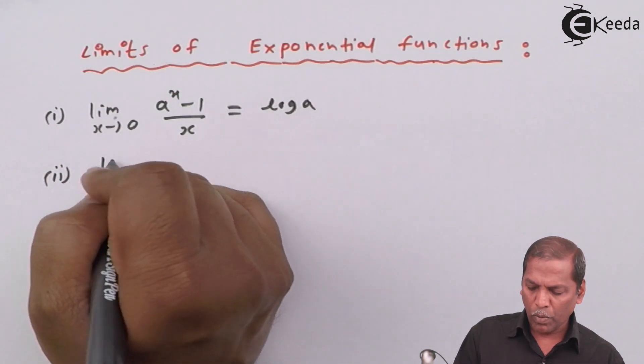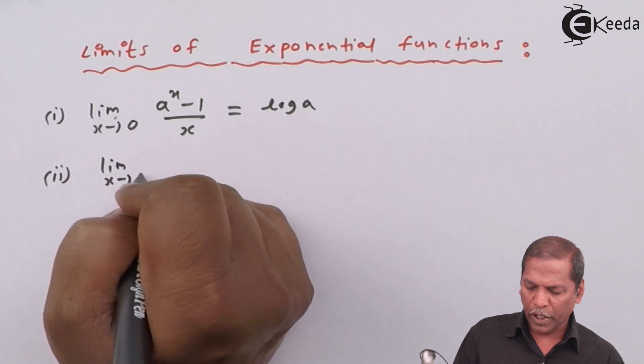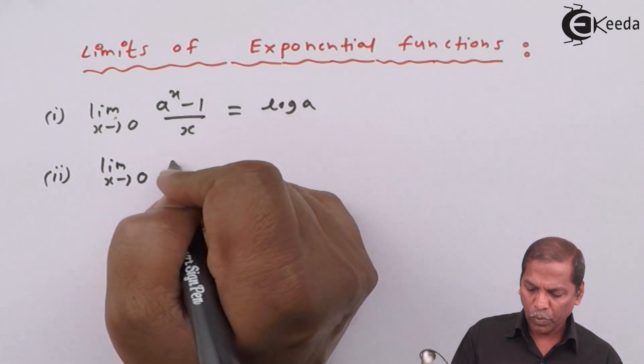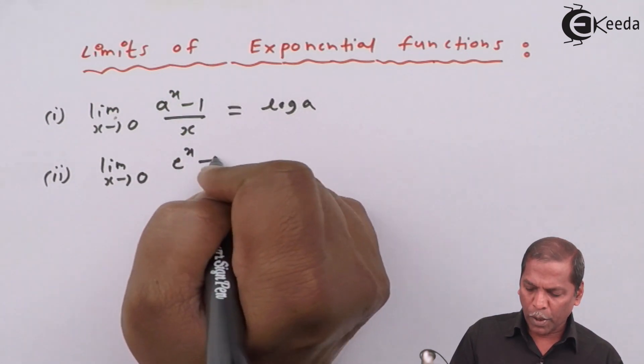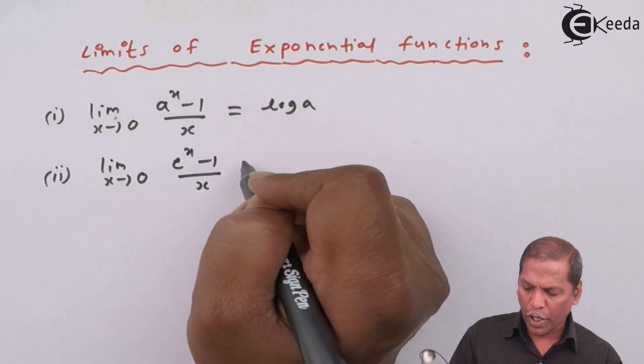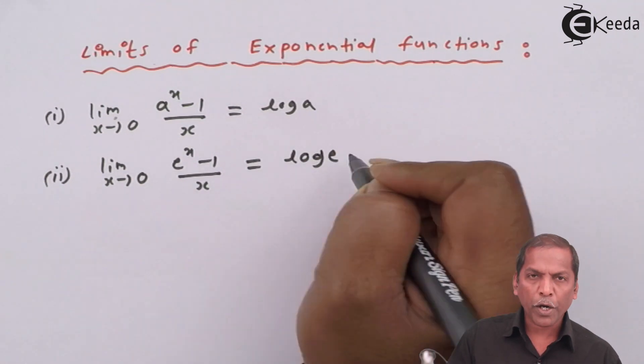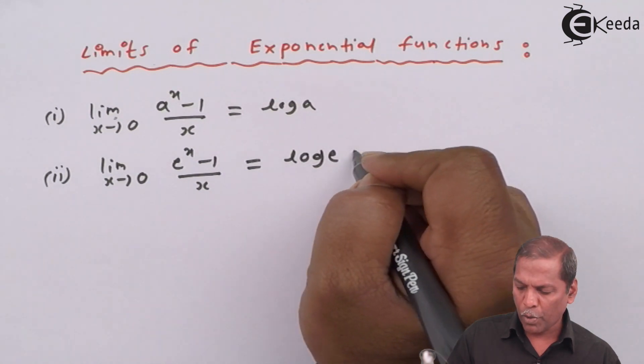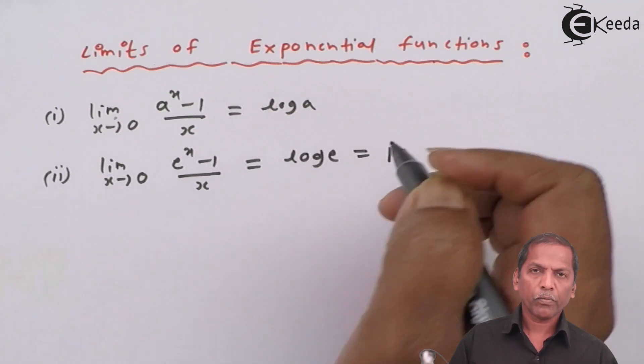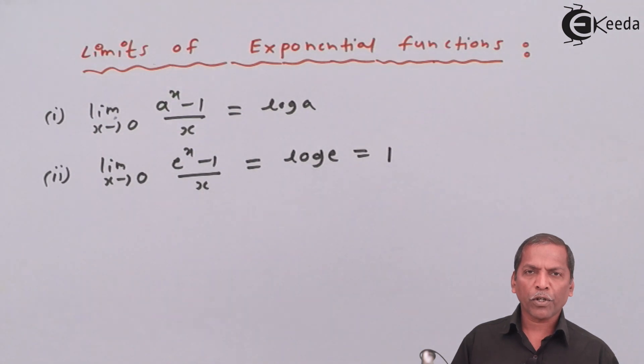Number 2, limit x tends to 0, e raised to x minus 1 upon x, is equal to log e, and log e gives us 1. Here, e represents a rational number whose value lies between 2 and 3.